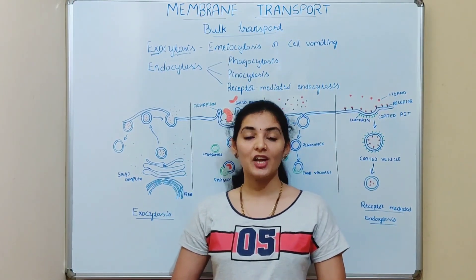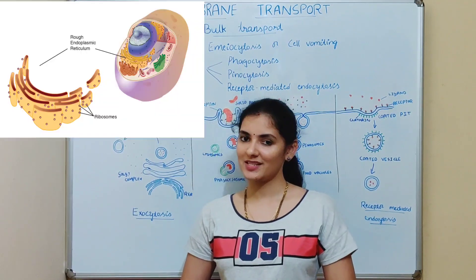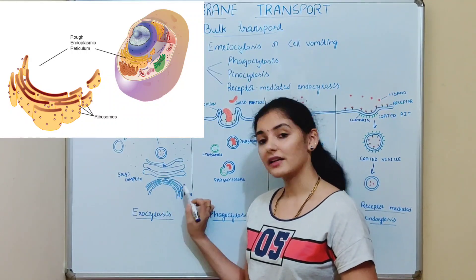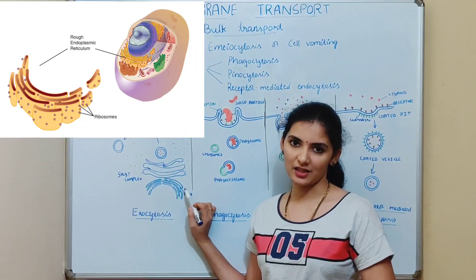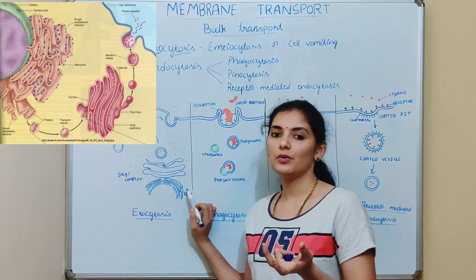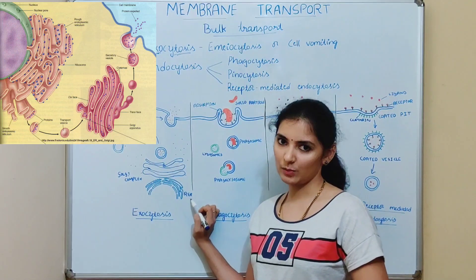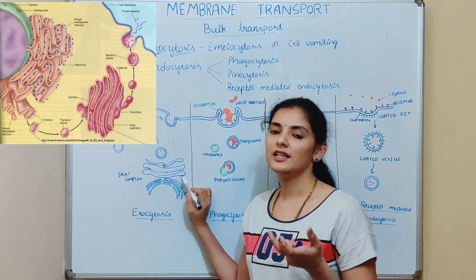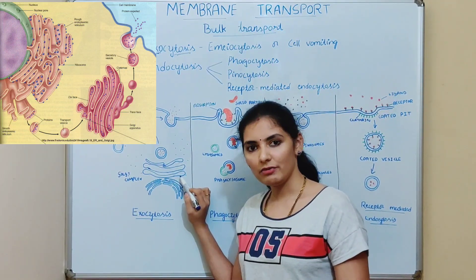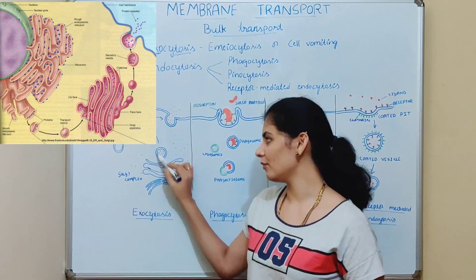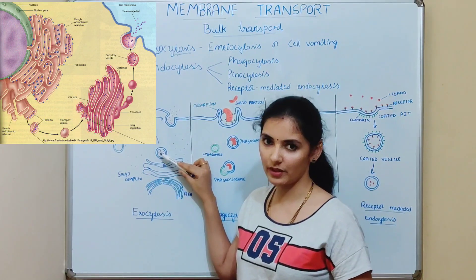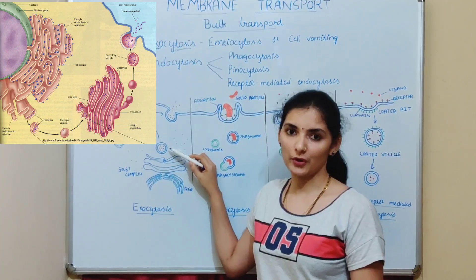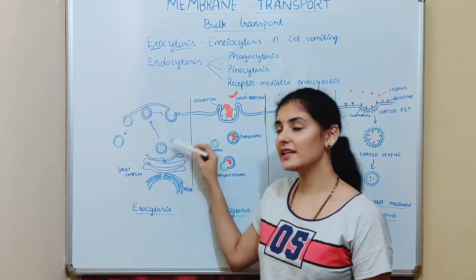Where does protein synthesis take place? Proteins are synthesized in the ribosome. The major part of proteins are synthesized by ribosomes present on the endoplasmic reticulum. After synthesis, the protein undergoes certain changes in the rough endoplasmic reticulum and is then transported to the Golgi complex, where these proteins are concentrated, modified, and finally packaged into a vesicle.